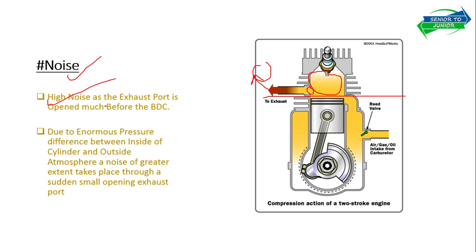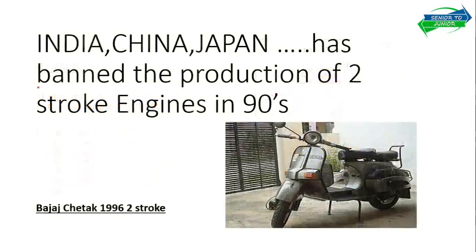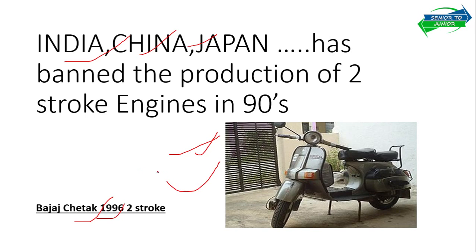So those are the three disadvantages of the two-stroke engine. Regarding the present scenario, India, China, Japan, and many more countries have banned the production of two-stroke engines — Japan in approximately the 70s, and India and China in the 90s. The Bajaj Chetak scooter is one example that was banned due to these three issues: short circuiting, charge dilution, and noise. There is no more production of two-stroke engines basically because of these three disadvantages.